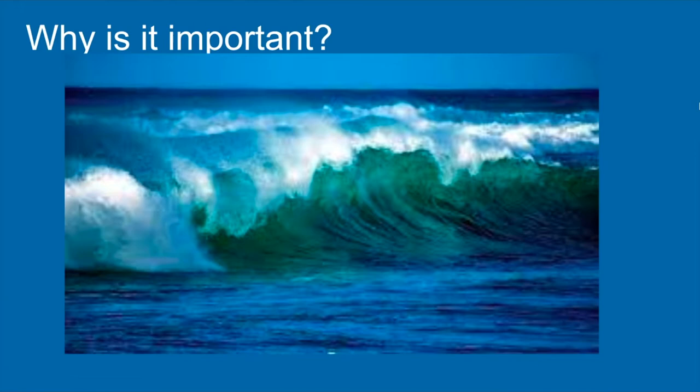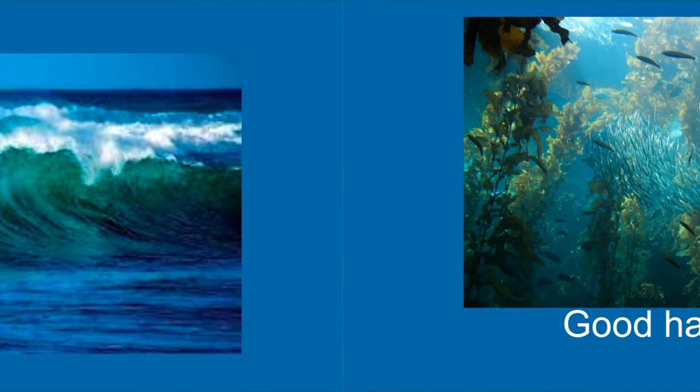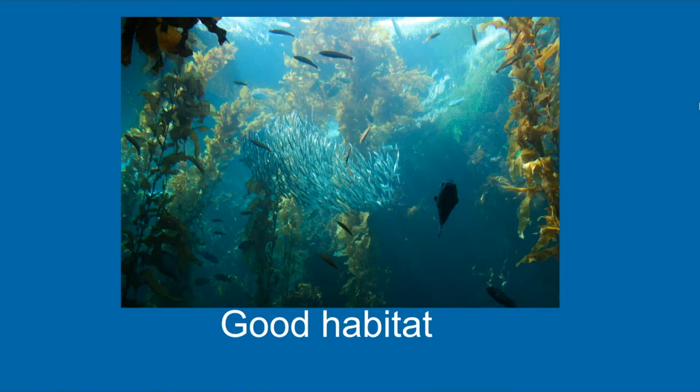Why is kelp important and why should you care? Kelp severely impacts the ocean's livelihood and the animals and creatures that inhabit it. Kelp is a good hiding place for small fish and animals when they're hiding from predators. The rockfish can take refuge when a predator like a shark is nearby. Kelp forests also cushion the effect of storm surges and sea level rise.